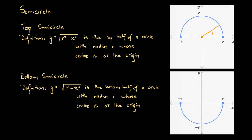Now let's look at the bottom semicircle. The definition looks very similar, but there are two key important parts that are different. First, y equals negative the square root of r squared minus x squared — so this functional form has a minus or negative sign. This says the functional form is the bottom half of a circle with radius r whose centre is at the origin. Sure enough, the graph shows a semicircle with centre at the origin, any point on the circumference is r units from the centre, and the two points on the x-axis are included.